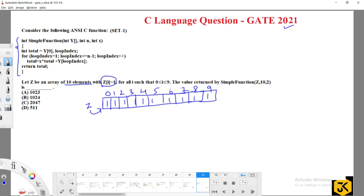The value written by the simple function z comma 10 comma 2, meaning that the z array they passed into y array. Obviously, if you are going to pass an array from one portion to another portion, the receiving parameter should be again another array. So they declared here y array, and the n value is 10, and the value of x is 2.